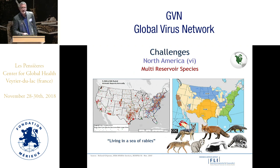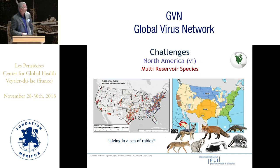Looking at the situation in North America more closely, we are confronted with a multi-reservoir species problem. Rabies is maintained in a bunch of wildlife reservoir hosts, including foxes, skunks, raccoons, coyotes and even mongoose — truly living in a sea of rabies, as colleague Richard Shipman from USDA Wildlife Services aptly put it.